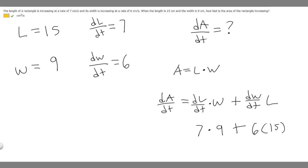So 7 times 9 is 63, plus 6 times 15, which is 90. And so if we add that together, we'll get 153. So 153 is going to be the answer to this, 153 centimeters squared per second.